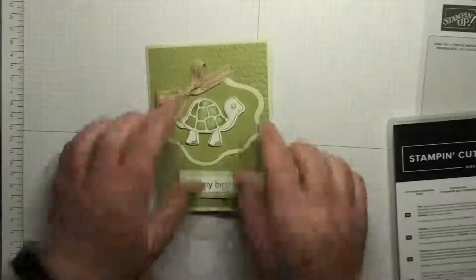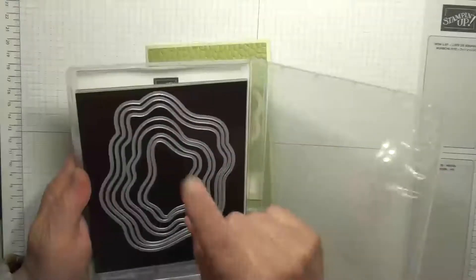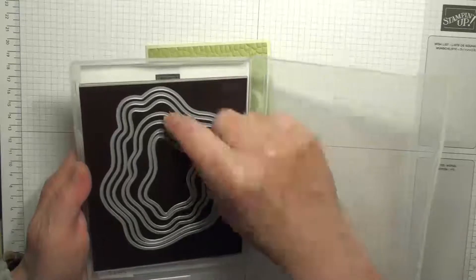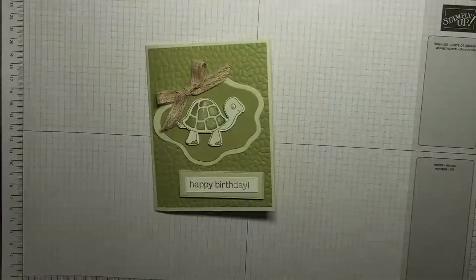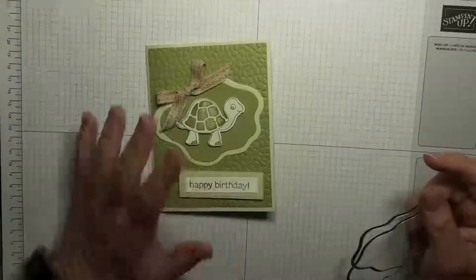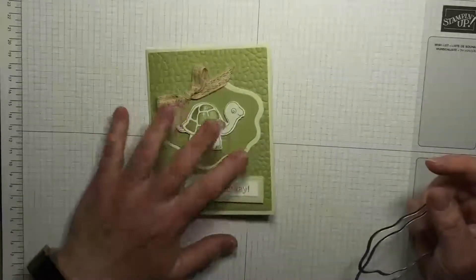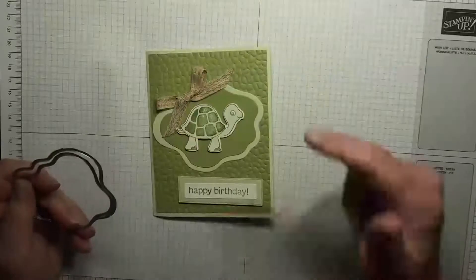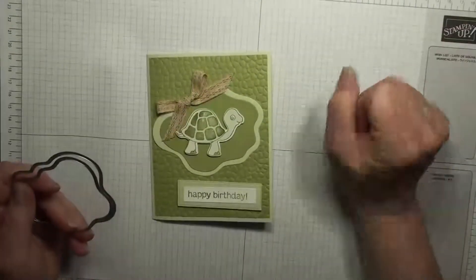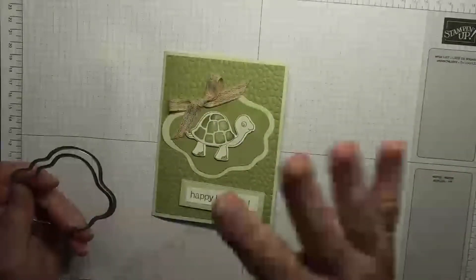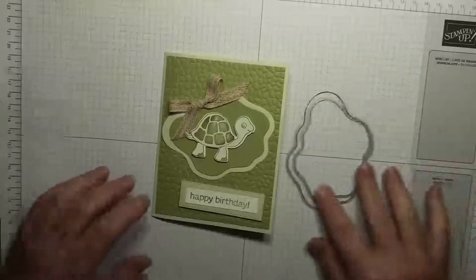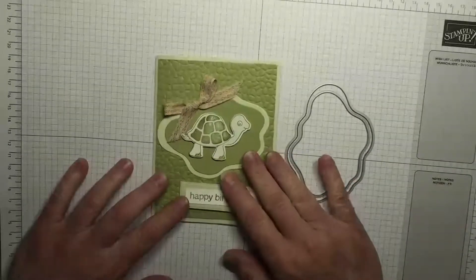We're gonna make this card today using our layering diorama dies. Now the dies we're using are these two middle ones here. And if you miss any of the measurements or the score lines or anything, I'll have everything over on my blog and I'll have a direct link to it down in the description box below. Go over to my blog and you'll get all the information you need there. It'll have a list of all the products I used for this card as well.